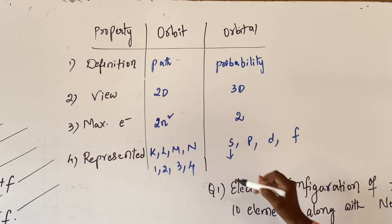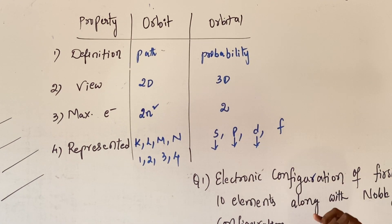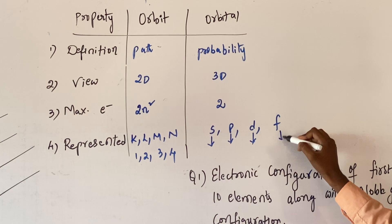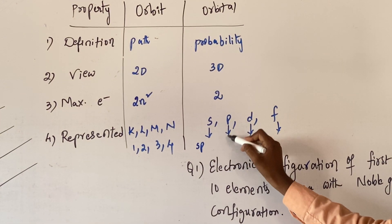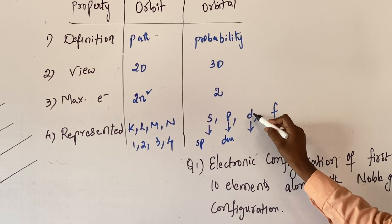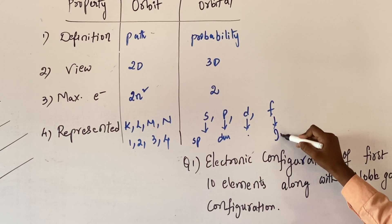Now here, S stands for Symmetric, P stands for Principle, D stands for Diffuse, and F stands for Fundamental. Coming to the shapes. S is spherical, P is dumbbell, D is double dumbbell, and F is complex.